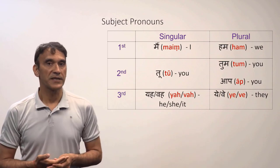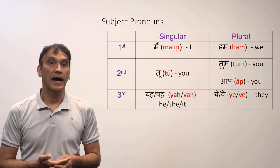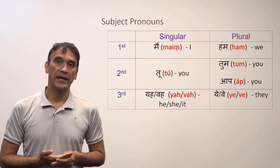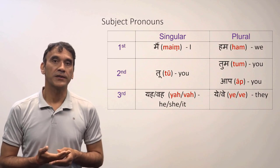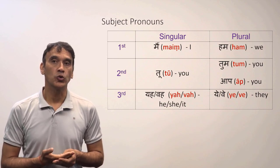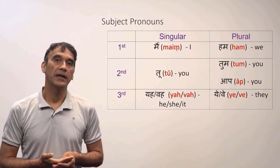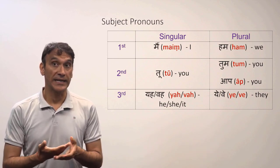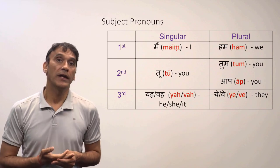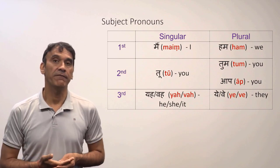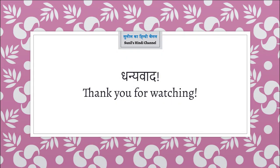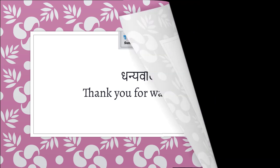Here is the final table for the subject pronouns: 'I' is 'mai,' 'we' is 'hum.' For 'you' there are three forms: 'tu,' 'tum,' and 'aap.' For third person singular, it is 'yay' and 'wo.' For third person plural, it is 'yay' and 'way.'